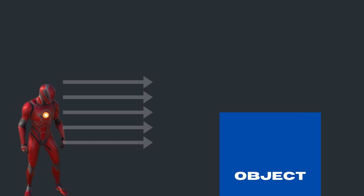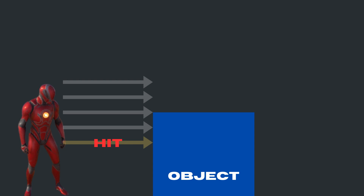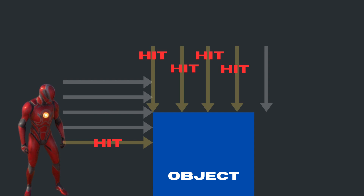When there are no objects, there won't be a hit. If an object is identified, there will be a trace hit. From the point of contact of the trace hit, a vertical location is identified at a certain height and vertical spear traces are sent to the object surface. The first hit will be the Vault start point and the last hit will be the Vault loop point.